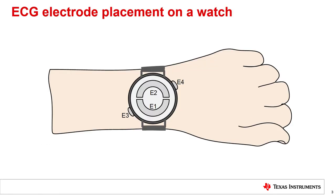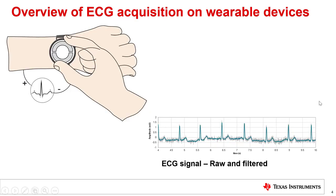This illustration depicts possible electrode locations for ECG signal acquisition on a wearable device. E1 and E2 are electrodes at the bottom surface of the wearable device that make contact with the left wrist of the user. Electrodes E3 and/or E4 are on the top side, and one or both of them can be contacted by the right hand of the user whenever the ECG signal is to be acquired. This illustration shows the user making contact using the fingers on the right hand to the electrodes on the top side of the watch whenever an ECG signal needs to be acquired.